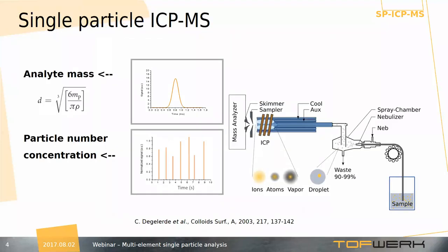This is single particle ICP-MS. For those of you who are not familiar with the method, let me briefly explain it. You start with a very diluted suspension or dispersion of nanoparticles and you introduce it into the plasma in the form of micro droplets. You can form those micro droplets with alternative devices like micro-droplet generators, but usually a standard sample introduction system is used, composed of a nebulizer and a spray chamber.